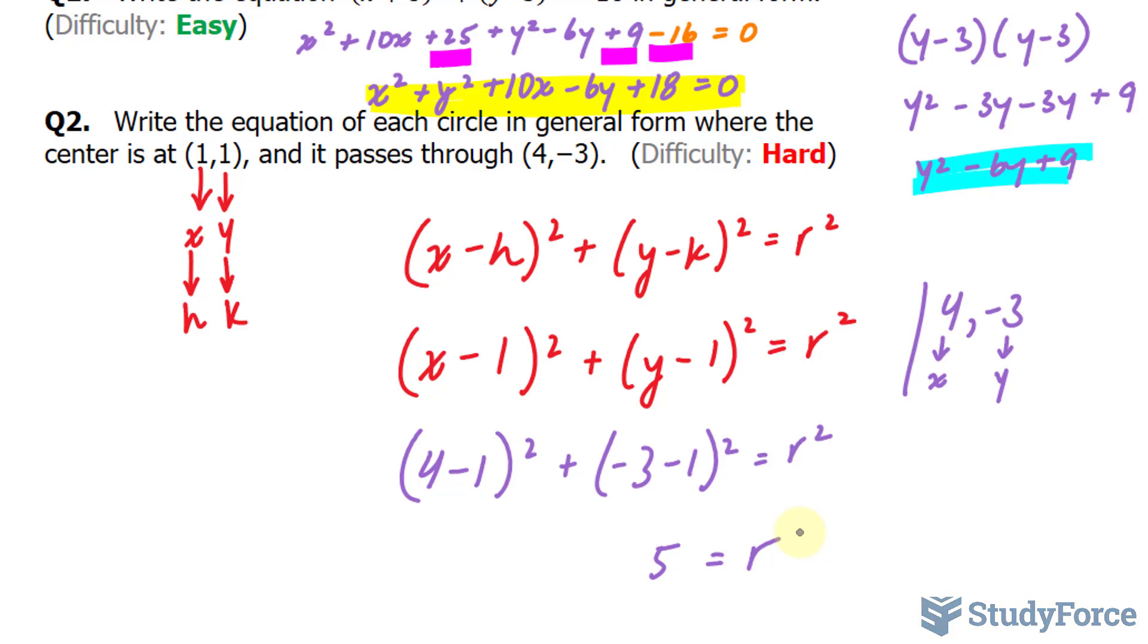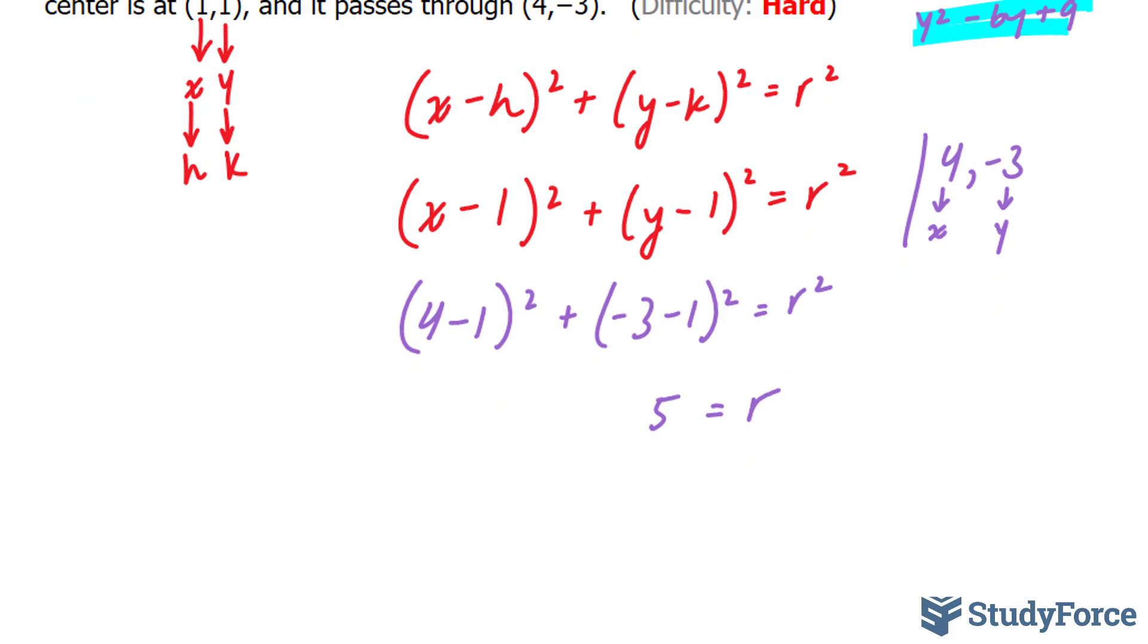I'll substitute this number into here where I end up with a standard form equation of (x - 1)² + (y - 1)² = 25. Now what I have to do is expand this like I did in question 1 so that it is in general form. Let's go ahead and do that.